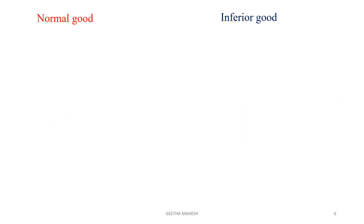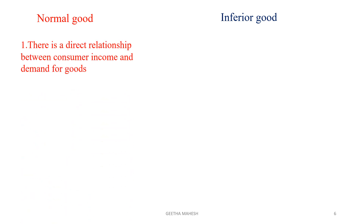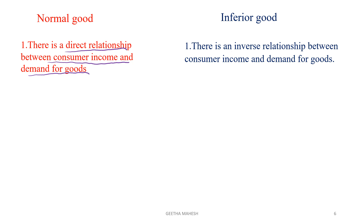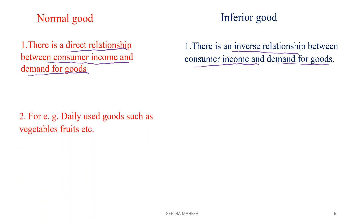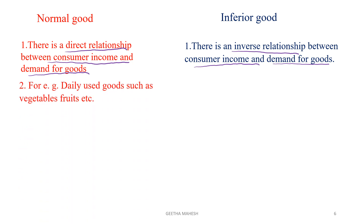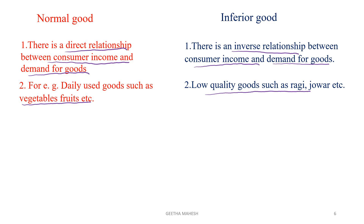Dear students, let us discuss the difference between normal goods and inferior goods. There is a direct relationship between consumer's income and demand for normal goods, but there is an inverse relationship between income of a consumer and demand for inferior goods. Good examples for normal goods are fruits and vegetables, and good examples for inferior goods are ragi and chava.